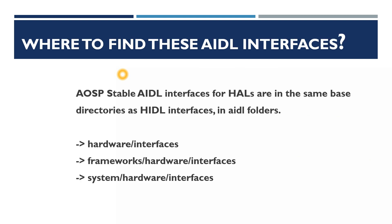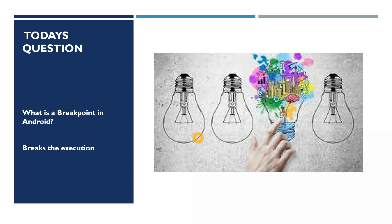So those are the three major reasons: AIDL is more stable than HIDL, there is no versioning overhead, and it is a single IPC language applicable throughout the entire Android architecture. As for where to find AIDL interfaces, AOSP stable AIDL interfaces are in the same directories where HIDL used to be — there will now be an AIDL folder instead. The three locations are hardware/interfaces, framework/hardware/interfaces, and system/hardware/interfaces. These are where hardware-related definitions live, and where you add or find AIDL interfaces.